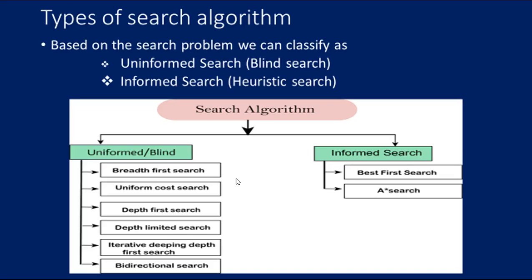The next thing we are going to see is types of search algorithms. We know searching can be done using an algorithm. When a problem occurs, we need to solve the particular problem — for that we need a searching concept. Only through searching can a goal be attained. There are several types of algorithms available in searching. Based on the search problem, we can classify them as uninformed search and informed search. Uninformed search can be called blind search, whereas informed search can be called heuristic search.